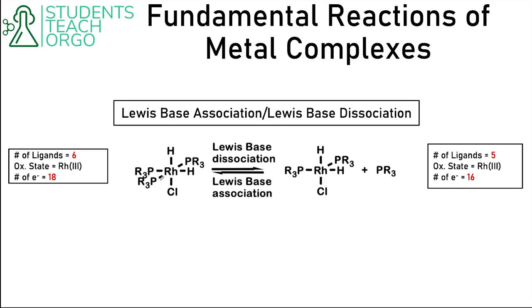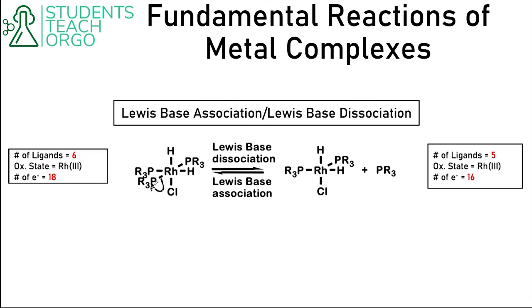Basically all that's happening here is a ligand is popping on and off of the metal. Going from left to right, this bond breaks and goes onto the phosphorus, leaving this PR3 floating around in solution. Going from right to left, the phosphorus attacks the rhodium and attaches. So we're changing the number of ligands — six ligands on the left, five on the right. The oxidation state doesn't change, but the number of electrons does: the complex has 18 electrons on the left but 16 on the right, because when the phosphorus leaves it takes those two electrons with it.